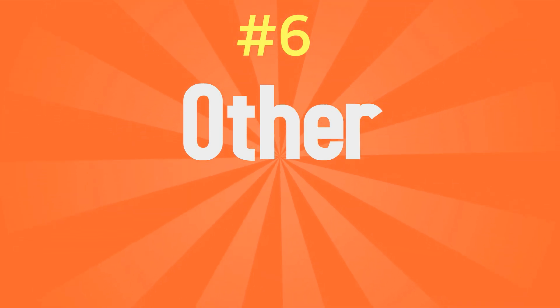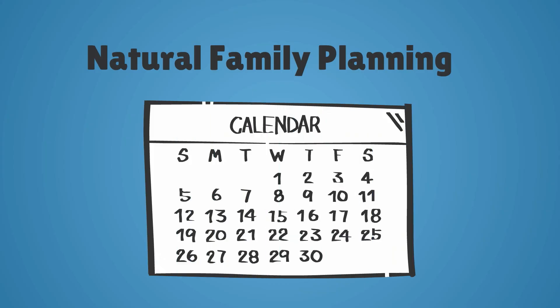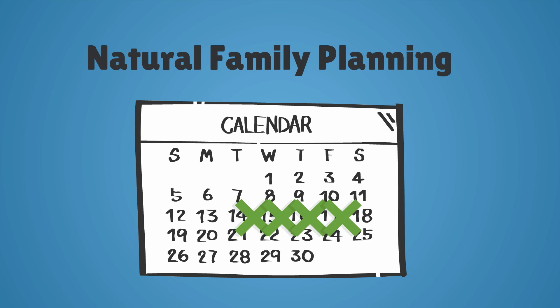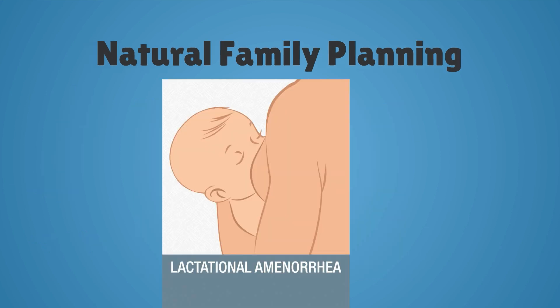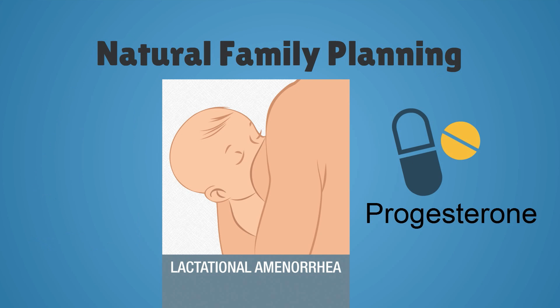Natural family planning can be effective for highly motivated patients with equally motivated partners. This method involves selective abstinence during the time in a woman's cycle when she is most fertile. Ovulation is measured by the calendar or by symptoms such as basal body temperature or cervical mucus. Breastfeeding is another form of natural family planning; in order to have effective inhibition of ovulation, a woman must breastfeed every three hours and remain amenorrheic. Progesterone-only forms of contraception are safe to use while breastfeeding.